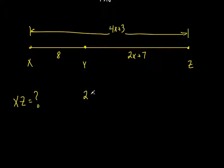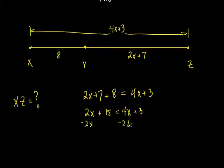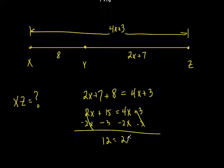So let's add them up: 2X plus 7 plus 8 equals the whole thing, which is 4X plus 3. Now we just do some algebra. That was your geometry — taking the picture and setting it up. That's the part most people are struggling with. So it's 2X plus 15 equals 4X plus 3. Subtract 2X from both sides, subtract 3 from both sides — we get 12 equals 2X. Divide by 2, and X is 6.